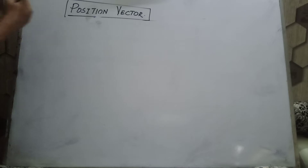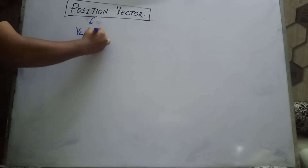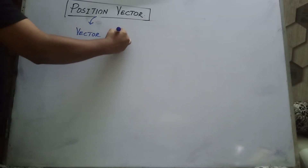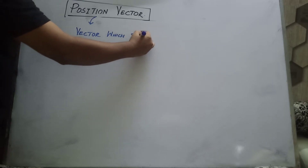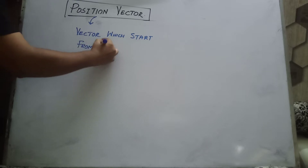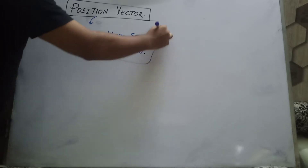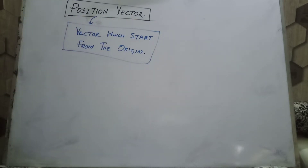Assalamu alaikum. In this video, I am going to describe what is meant by position vector, and questions involving position vectors and how to solve them. First of all, what is meant by position vector? A position vector is a vector which starts from the origin. Such a type of vector is said to be a position vector.